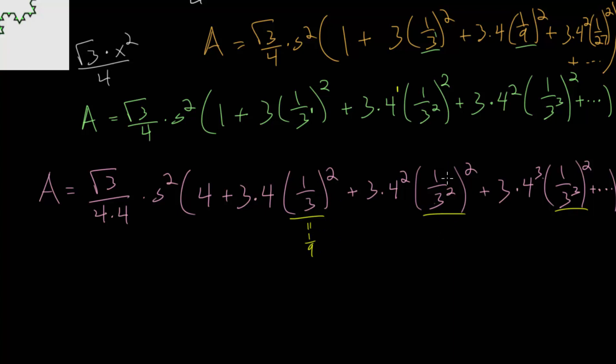Here we have 1 over 3 squared which is really 1 over 9, and we're squaring that: 1 over 9 times 1 over 9. This is 1 over 81, or 1 over 9 squared.